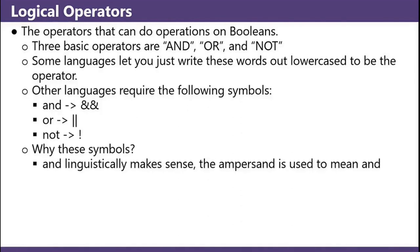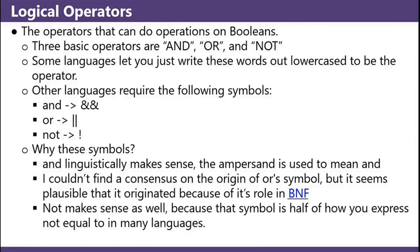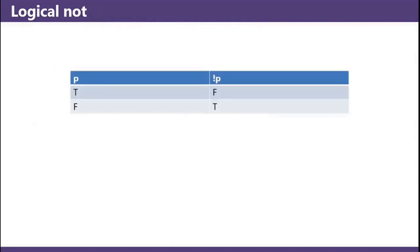Why these symbols? And linguistically makes sense — the ampersand is used to mean 'and'. I couldn't find a consensus on the origin of or's symbol, but it seems plausible that it originated because of its role in BNF — I have BNF's Wikipedia page linked in the description, but exactly what it is or why it's important isn't important in this video. Not makes sense as well, because that symbol is half of how you express not equal to in many languages.